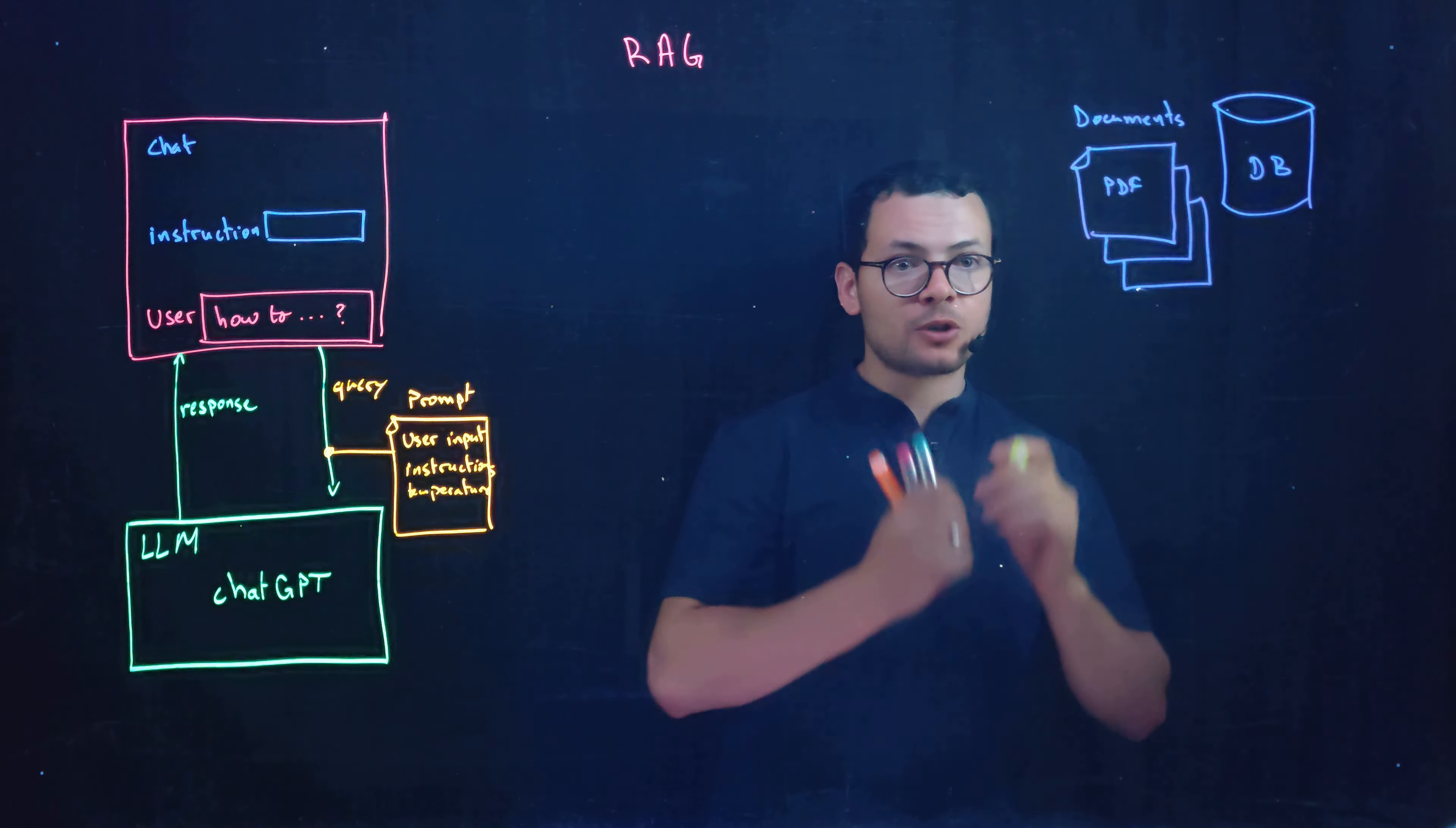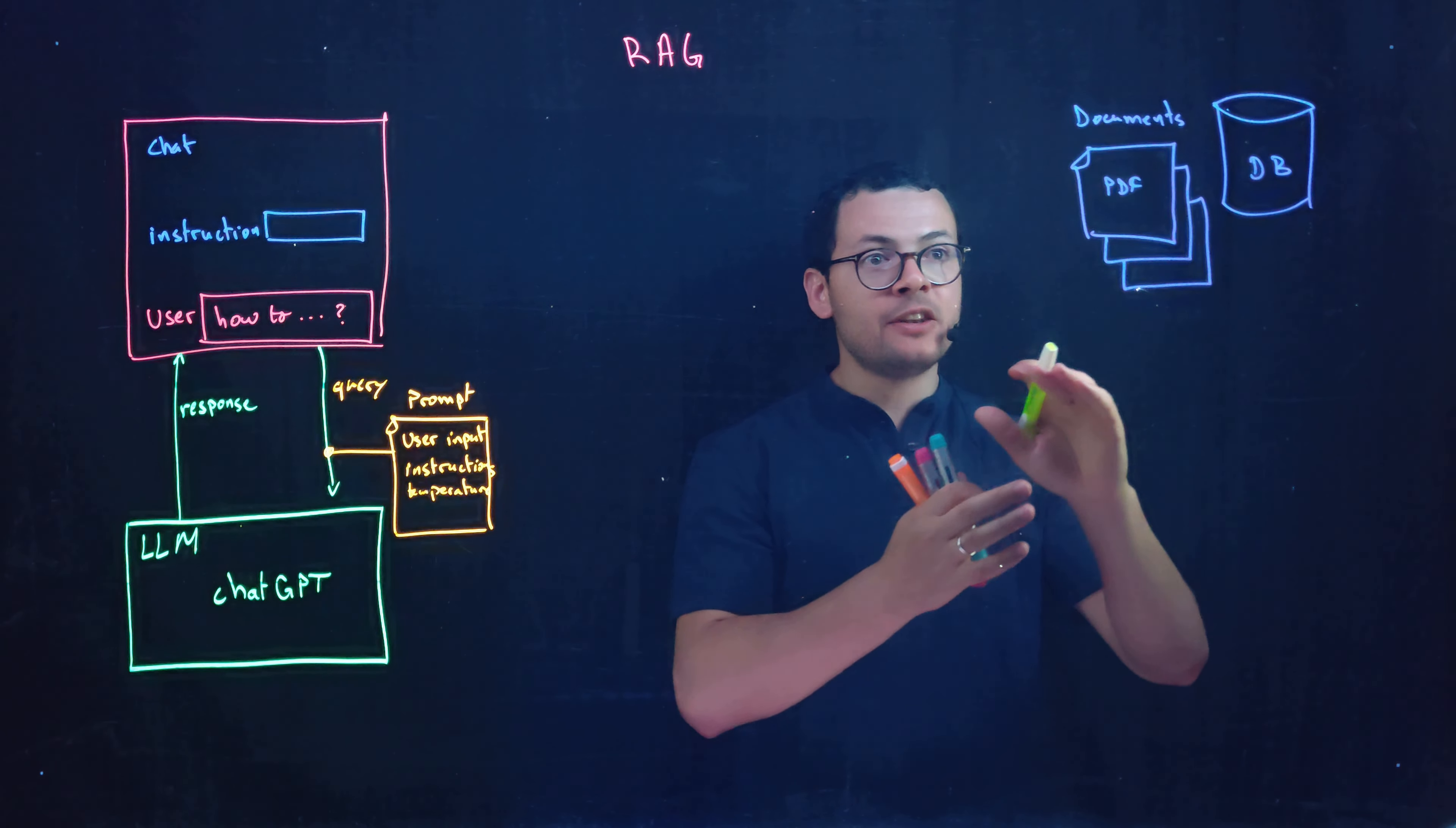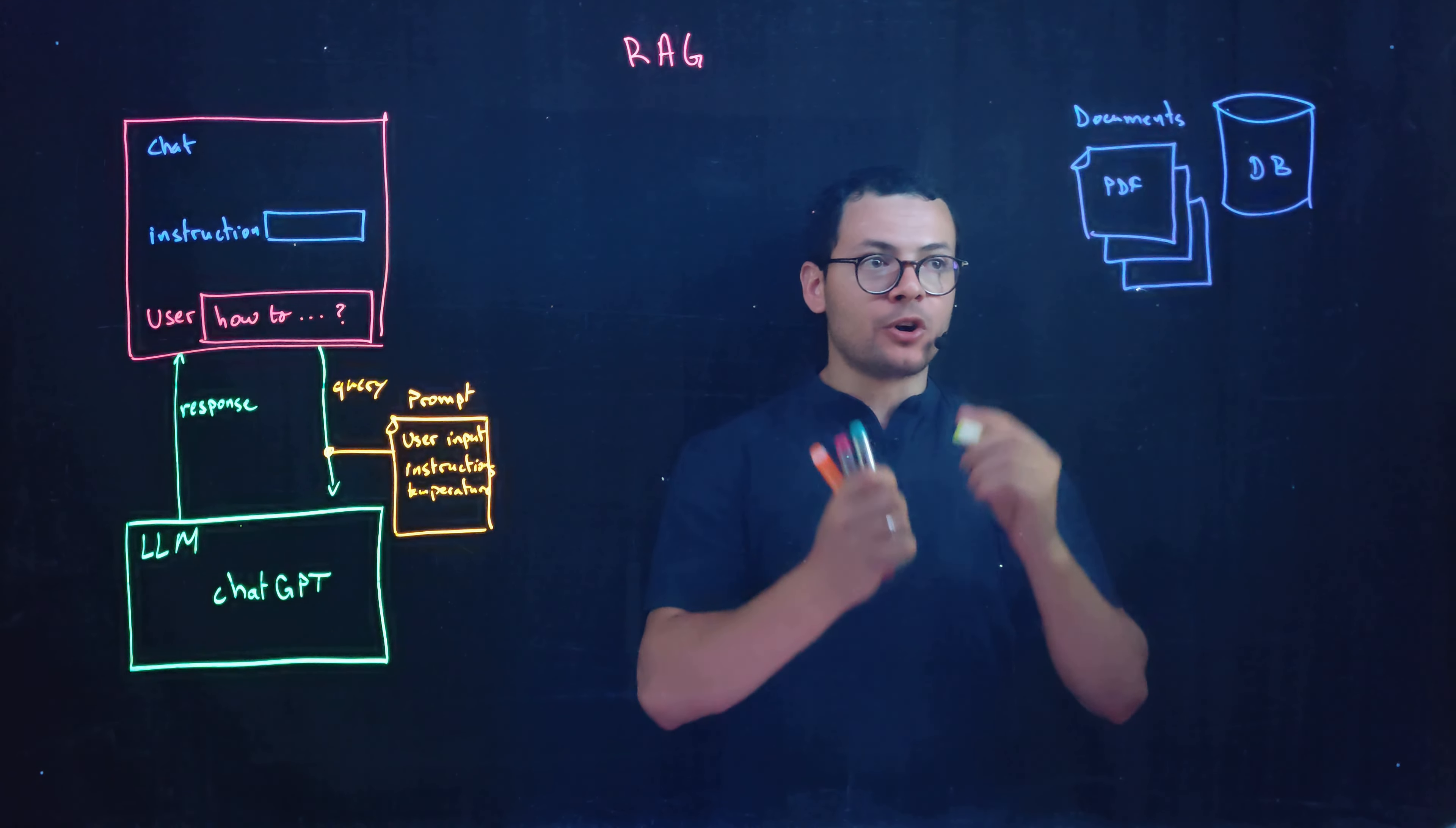Then here we have a second solution that is using RAG, Retrieval Augmented Generation. So what we'll do here is that we'll index those documents and then we'll be able to retrieve and search within these documents and send those documents to ChatGPT. How this works?